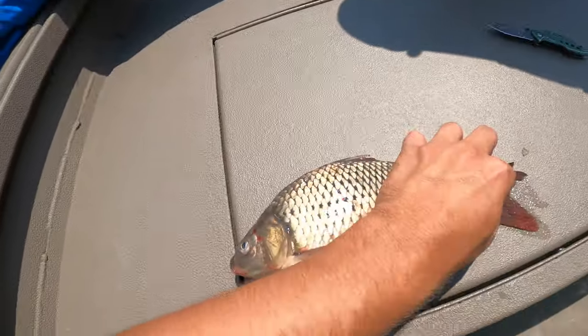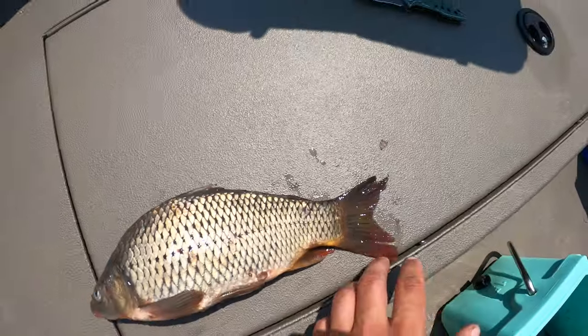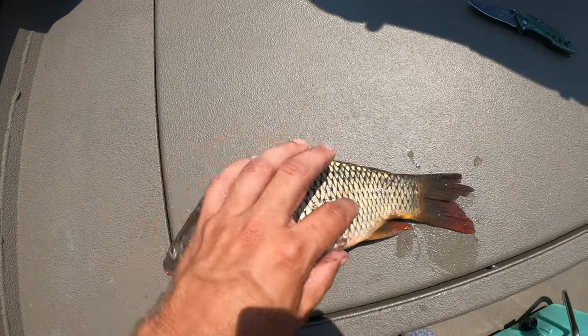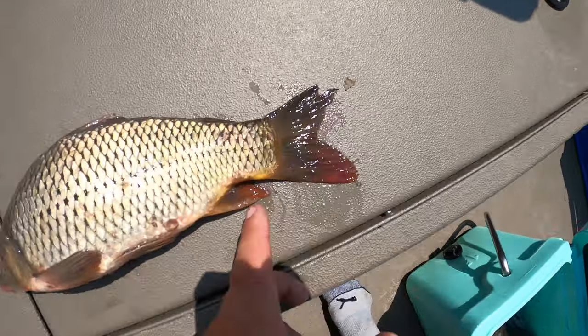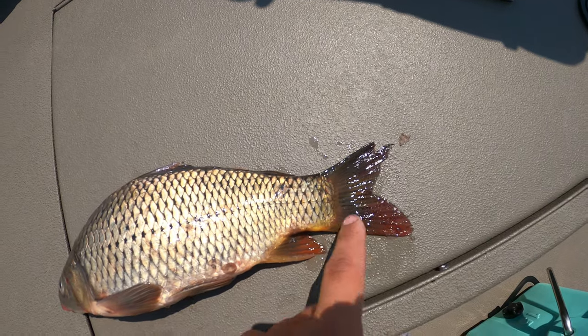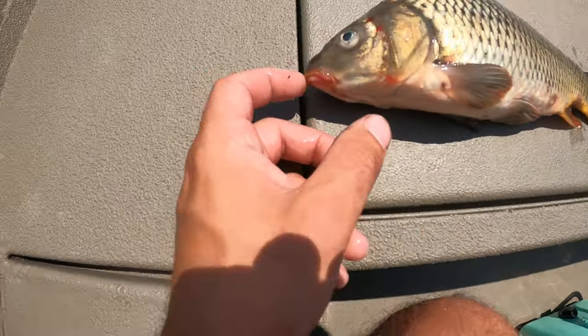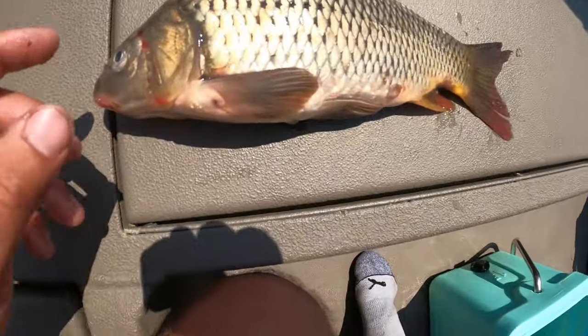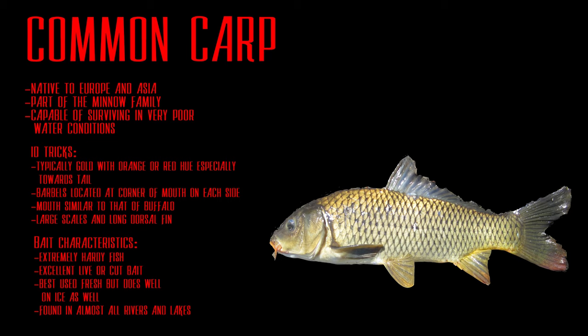Next up is common carp, which is very often confused with other species. Easy to identify by the big crosshatch scale patterns and almost always an orange or red tint on their tail fin and lower fins. They also have small barbels on their mouth. They look quite a bit like buffalo, but if you look for that orange coloration you should be able to tell the difference. Very good bait, very common in a lot of waters. These can get very big and can be caught on corn — they're a lot of fun on rod and reel too.